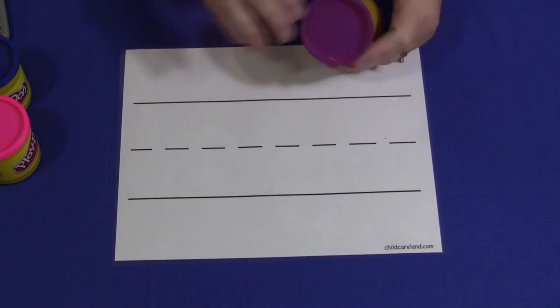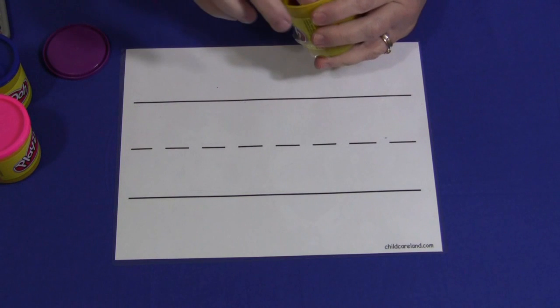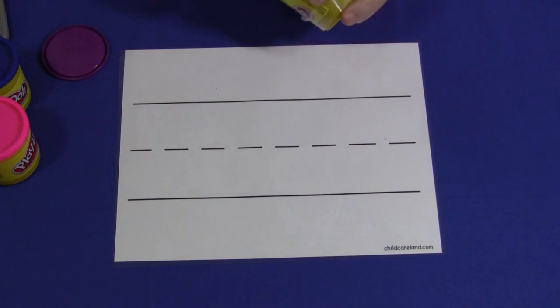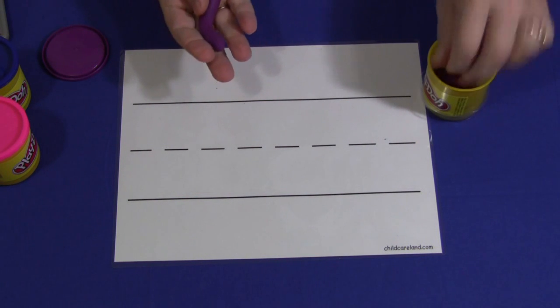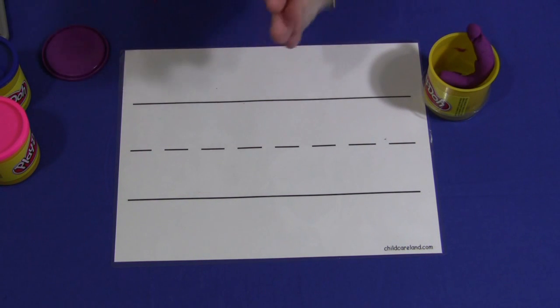The basic concept of this is that the children would take the Play-Doh out and kind of like we do with the Play-Doh chains, they would roll it and make letters out of it.